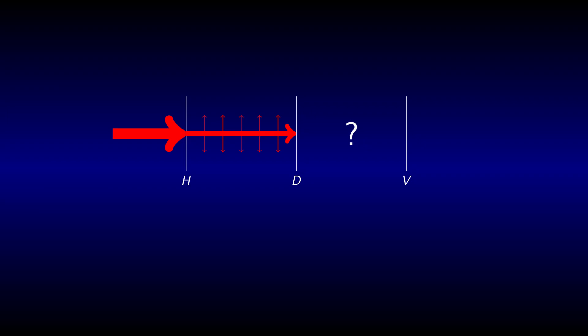Right after the horizontal filter, a photon can be described by a certain wave function that corresponds to horizontal polarization. Without knowing any details about it, we call it H.